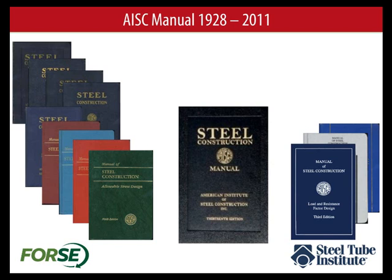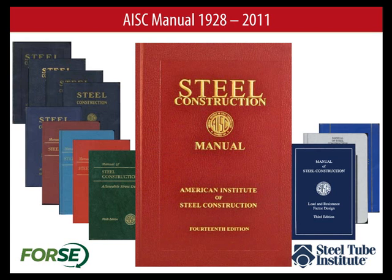On the right were the three LRFD manuals, which weren't necessarily quite as widely used. Then in 2005, AISC merged the two methods — ASD and LRFD — into one method, updated the ASD design provisions, and released the 2005 specification and the 13th edition steel construction manual. The more recent manual in circulation is the 14th edition, which continues that combined ASD and LRFD method.